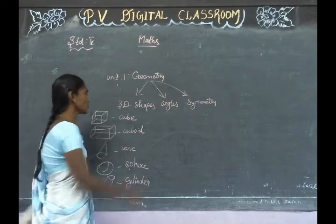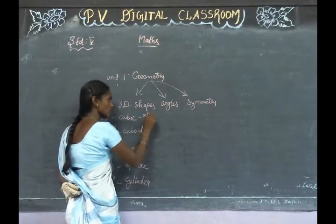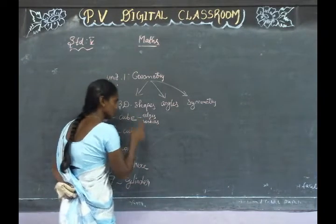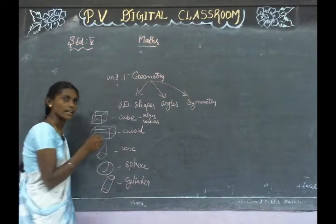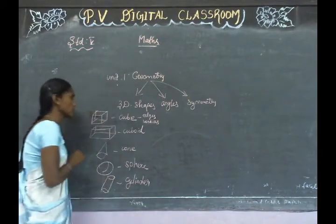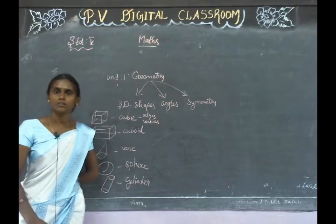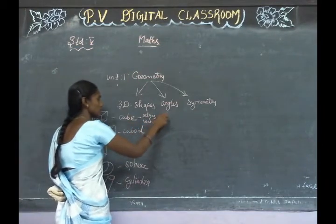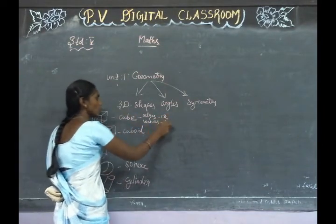For the cube, we have edges, faces, vertices, and diagonals. If we have a cube, we have edges. Cube has 12 edges.